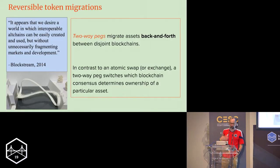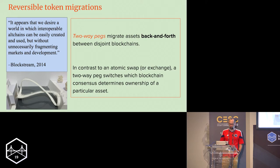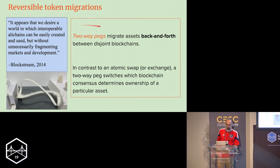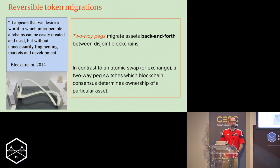Two-Way Peg — the best way I can summarize it is a mechanism that enables reversible token migration. The Two-Way Peg is the mechanism which migrates assets back and forth between disjoint blockchains. You have to be able to get it back.